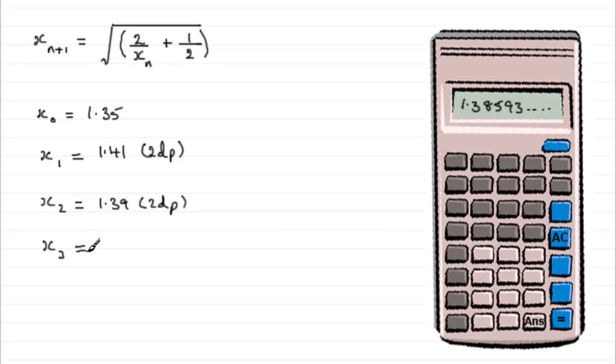And finally, to get x3, all we need to do is press the equals button. This will disappear, and x3 should appear, as 1.39394, and so on. And this to 2 decimal places, is 1.39 to 2dp. Alright? So hopefully that gives you some idea how you can use your calculator to get the other iterations, x1, x2, x3.